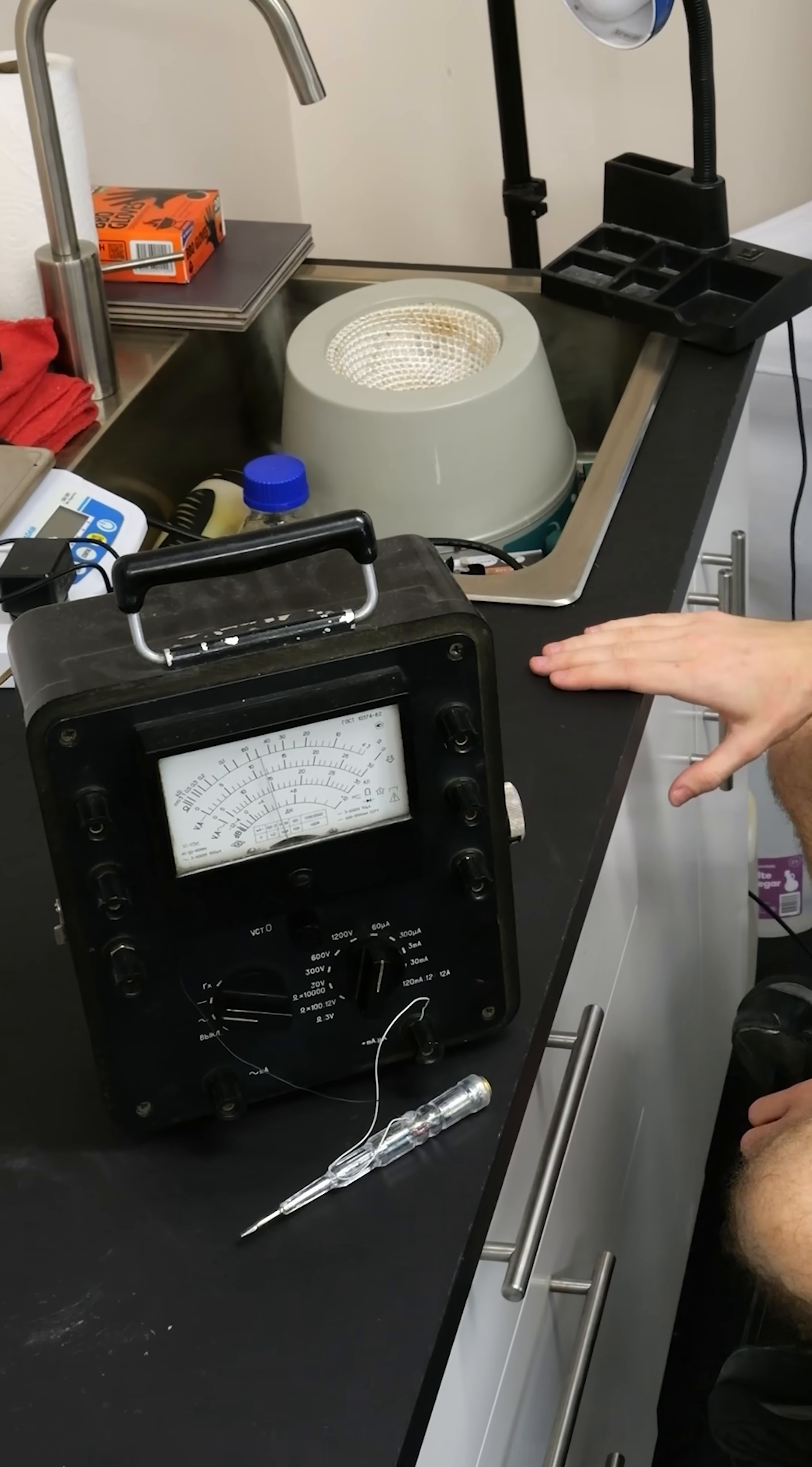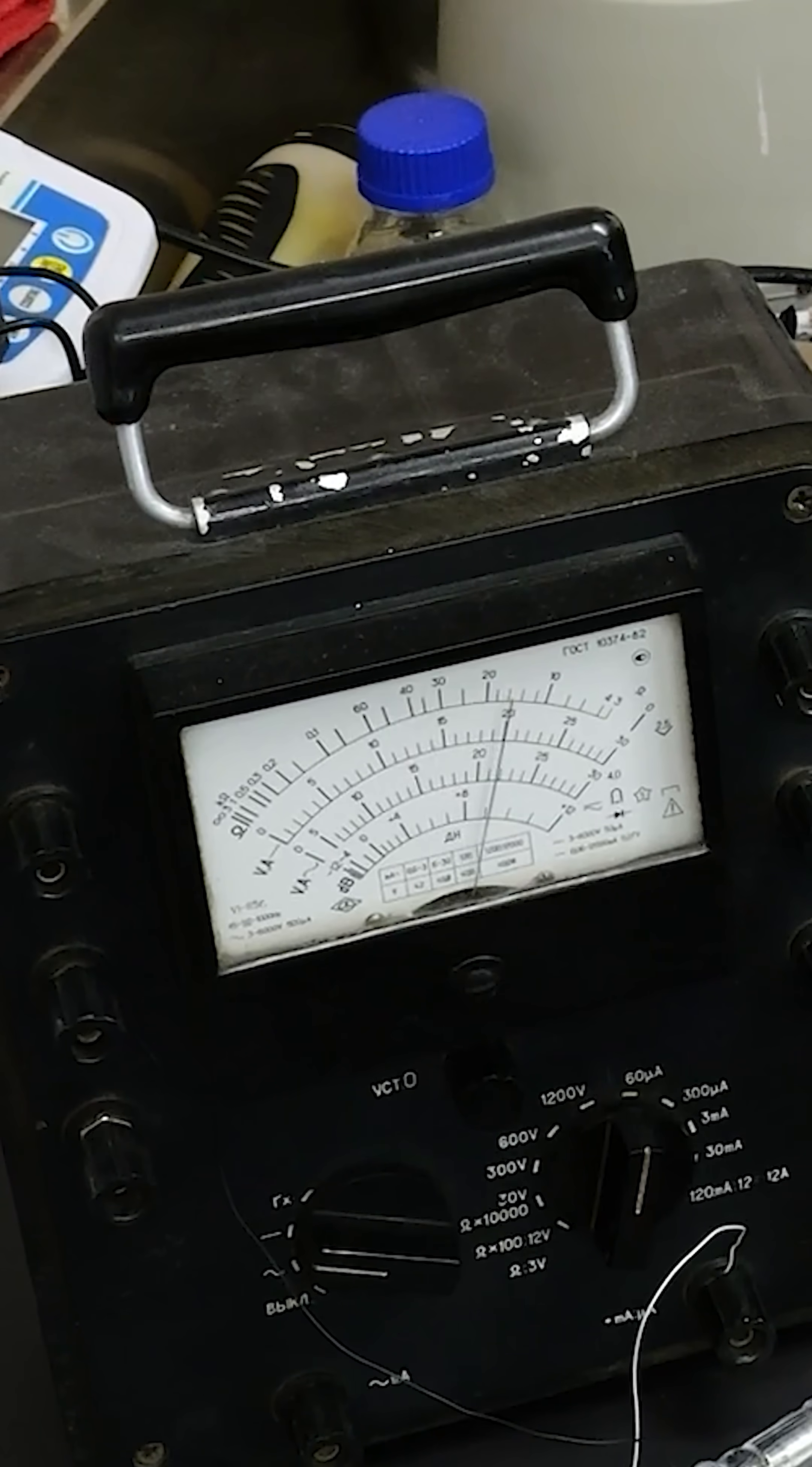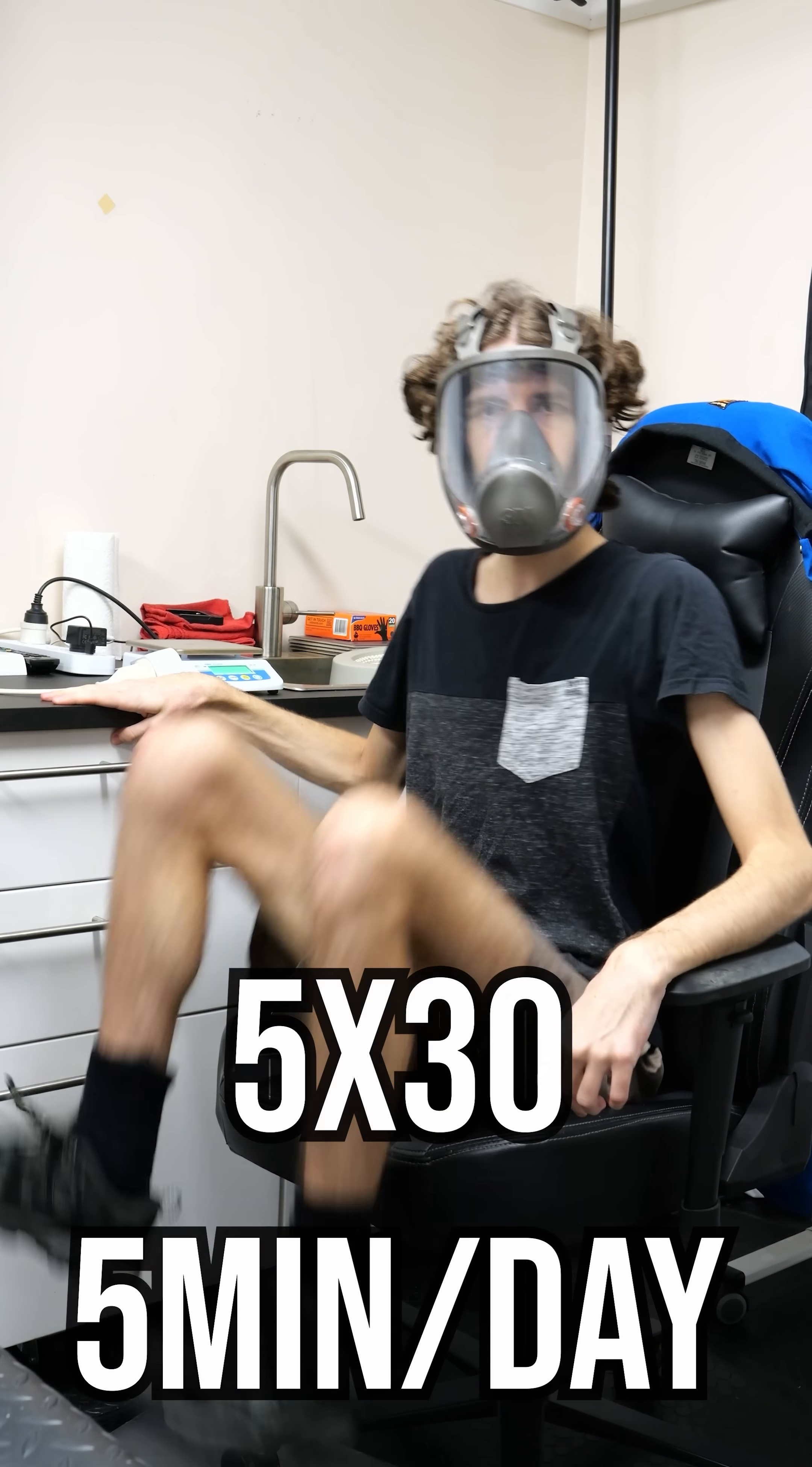If I touch the table, the reading increases despite no physical connection. And then if I move my feet closer to the ground, the meter goes up even higher. I can literally move my legs up and down to change the meter's reading. But this gives us an important clue to what's going on.